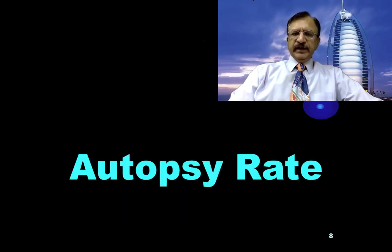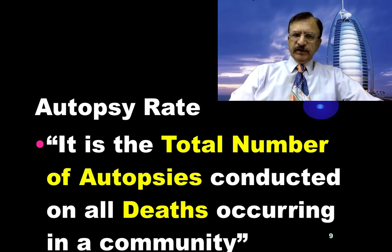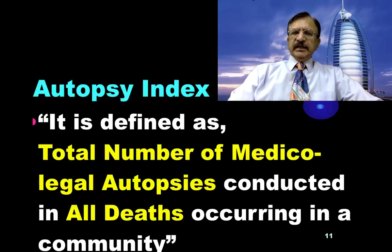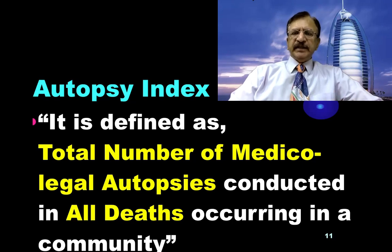Starting with the topic — what is autopsy rate? Autopsy rate is the total number of autopsies conducted on all deaths occurring in our community. It includes medical, legal, and all types of autopsies on all deaths. Whereas the autopsy index is the number of medical legal autopsies conducted on all types of deaths in our community.